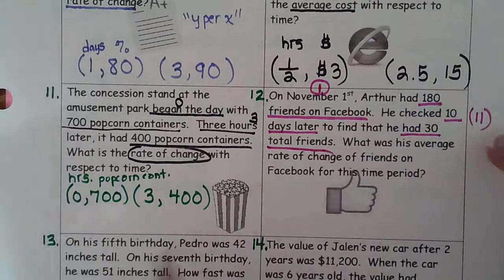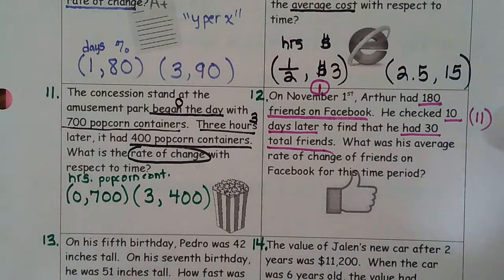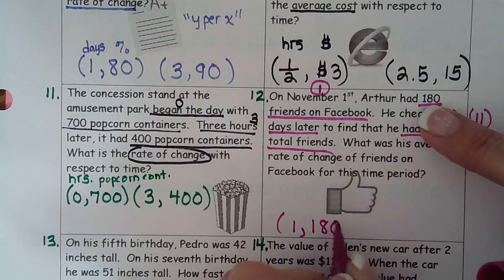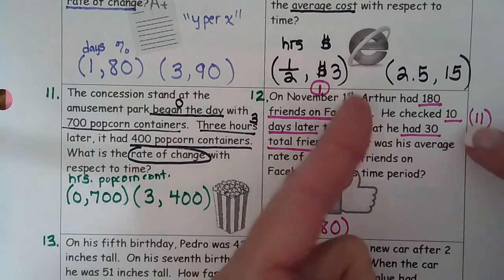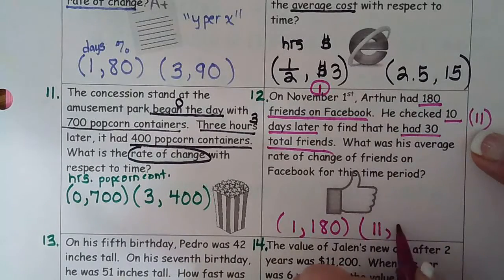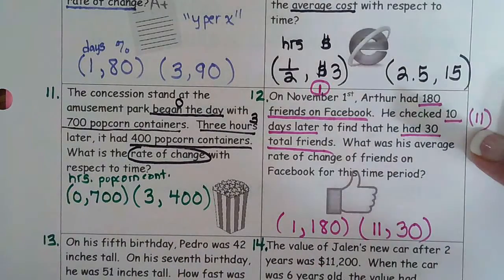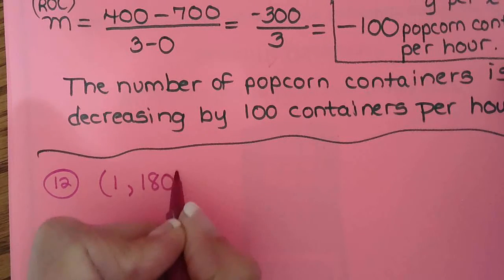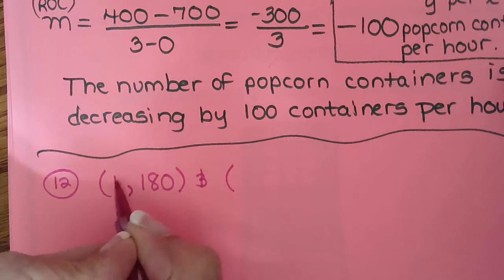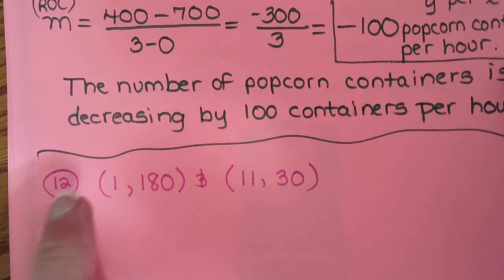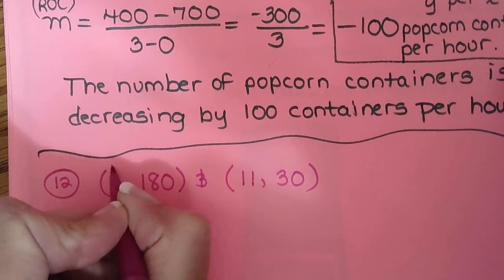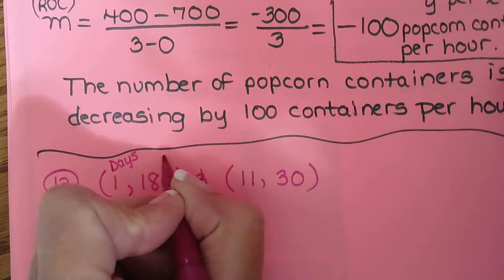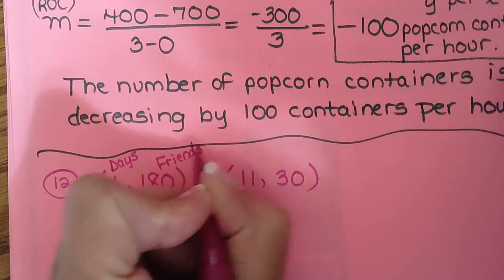He had 30 total friends. Oh, how sad. He lost 150 friends. That's sad, isn't it? So the ordered pair would be 1, on November 1st he had 180 friends. And then 10 days later, November 1st, 1 plus 10 is 11, 30 friends. Okay, so let's bring those over to this next page. So November 1st, 180 friends. And 10 days later, 1 plus 10, 11, 30 friends. So this is days, first day, second day. And 180 is friends on Facebook.